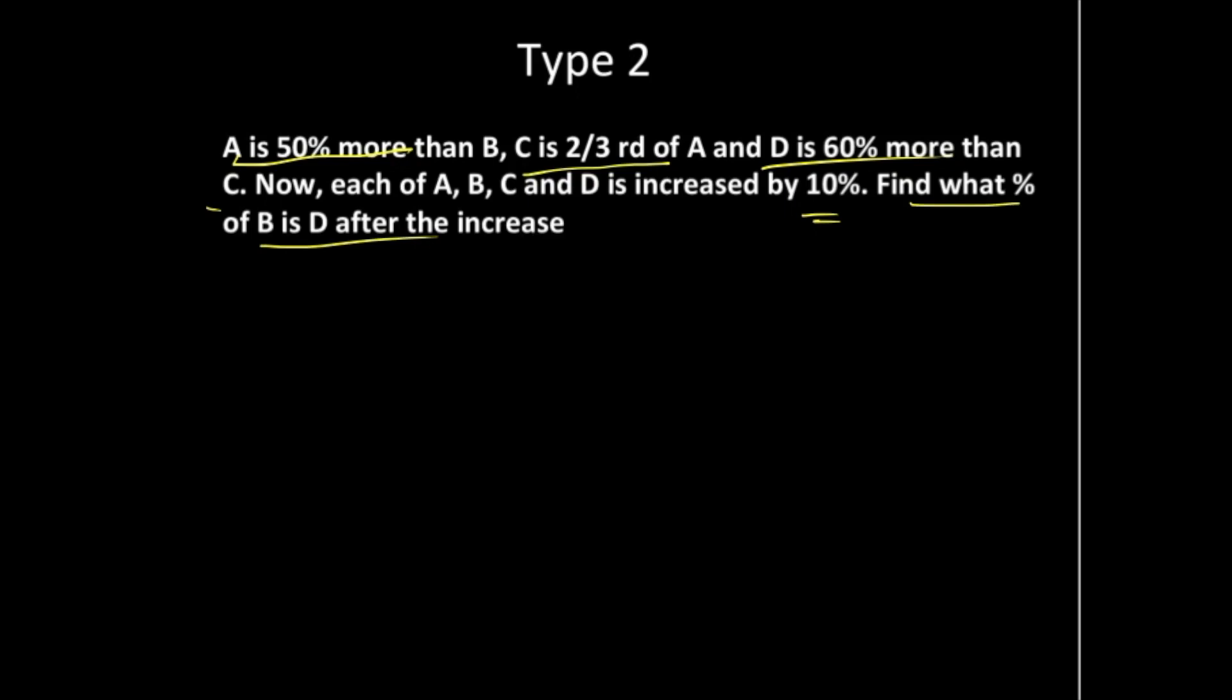Since none of the values are given to us, we'll assume the most powerful number in percentages, that is 100. In the first statement, A is 50% more than B, so we'll assume B equals 100. If B equals 100, then A is 50% more than that, so A would be 150.